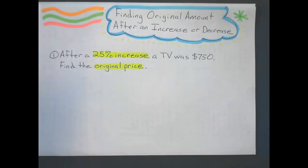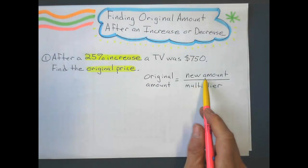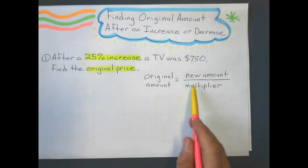always, for all these problems. So how I work this out is, if you want to find out the original amount, it's the new amount, in this case $750, divided by the multiplier.